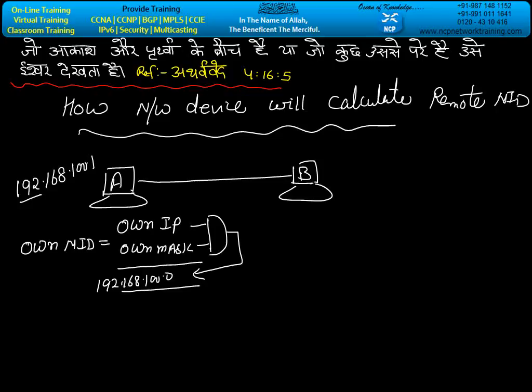Let's say the administrator applied the IP address on machine B as 192.168.100.2. The administrator knows the NID of 192.168.100.2, but how will this machine calculate the NID of B - the remote NID?